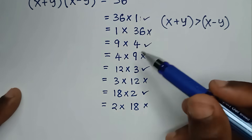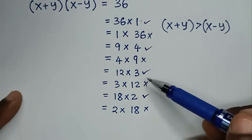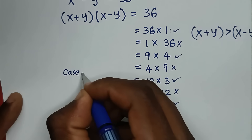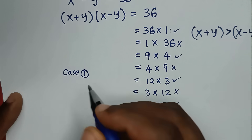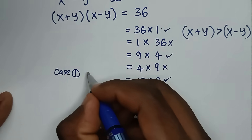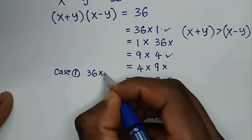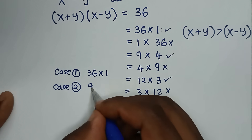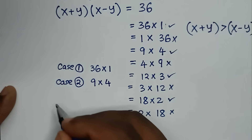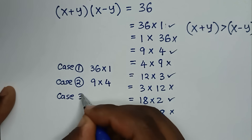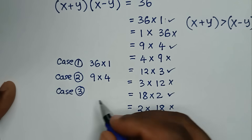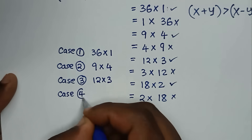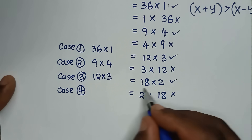So we have 4 valid cases. Case 1 is 36 times 1. Case 2 is 9 times 4. Case 3 is 12 times 3. Case 4 is 18 times 2.